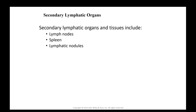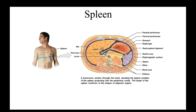Secondary lymphatic organs are going to be things such as lymph nodes, the spleen, and lymphatic nodules. Here you see a picture of the spleen, which is important in helping to filter out these different microorganisms.